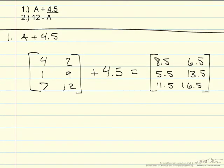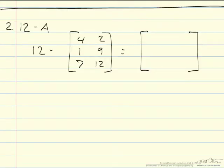Problem number 2 is 12 minus A. Let me set this one up for you as well. Here is problem 2. The way it is set up, you want to subtract each individual element of matrix A from the number 12.